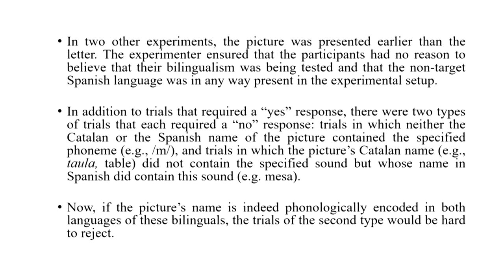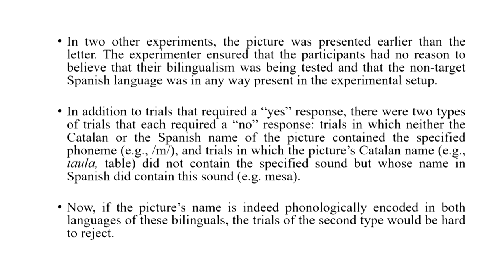In other experiments the pictures were presented slightly earlier than the letter, so the picture came first and then the letter. The experimenter ensured that participants had no reason to believe their bilingualism was being tested and that the non-target language Spanish was not present in any way in the experimental setup. In addition to trials requiring a 'yes' response, there were two types of 'no' trials — one in which neither the Catalan nor Spanish name carried the sound, and another in which the Catalan name did not contain the specified sound but the Spanish name did.